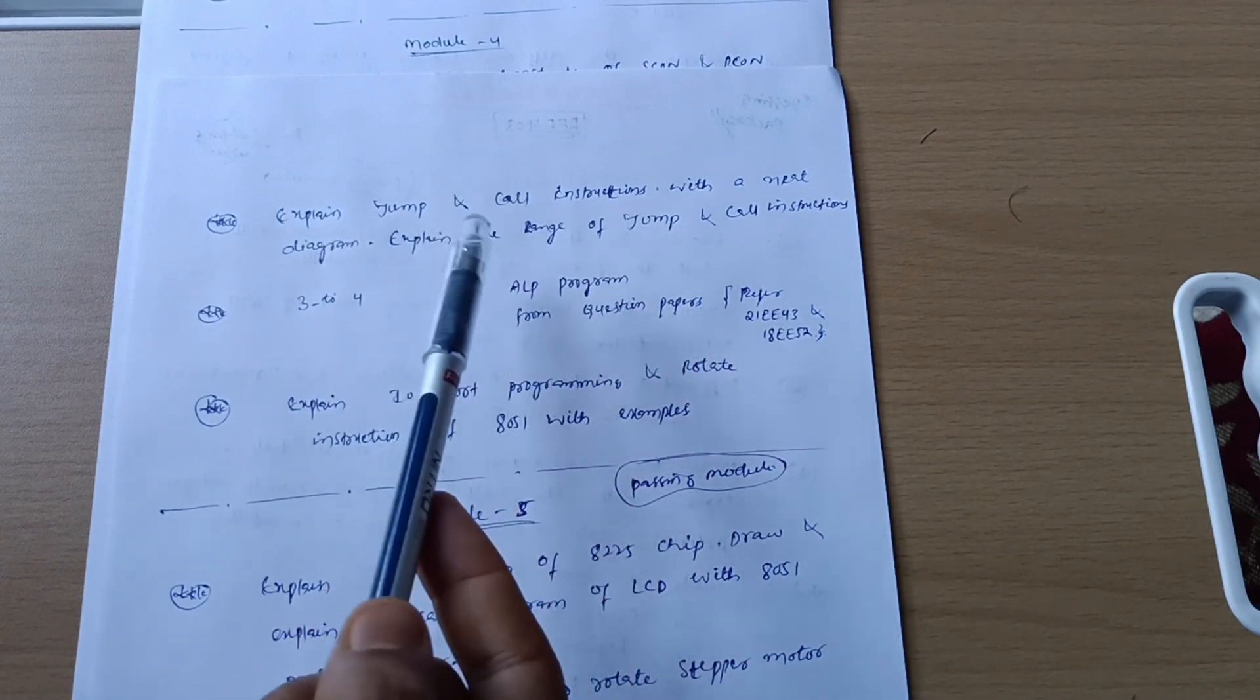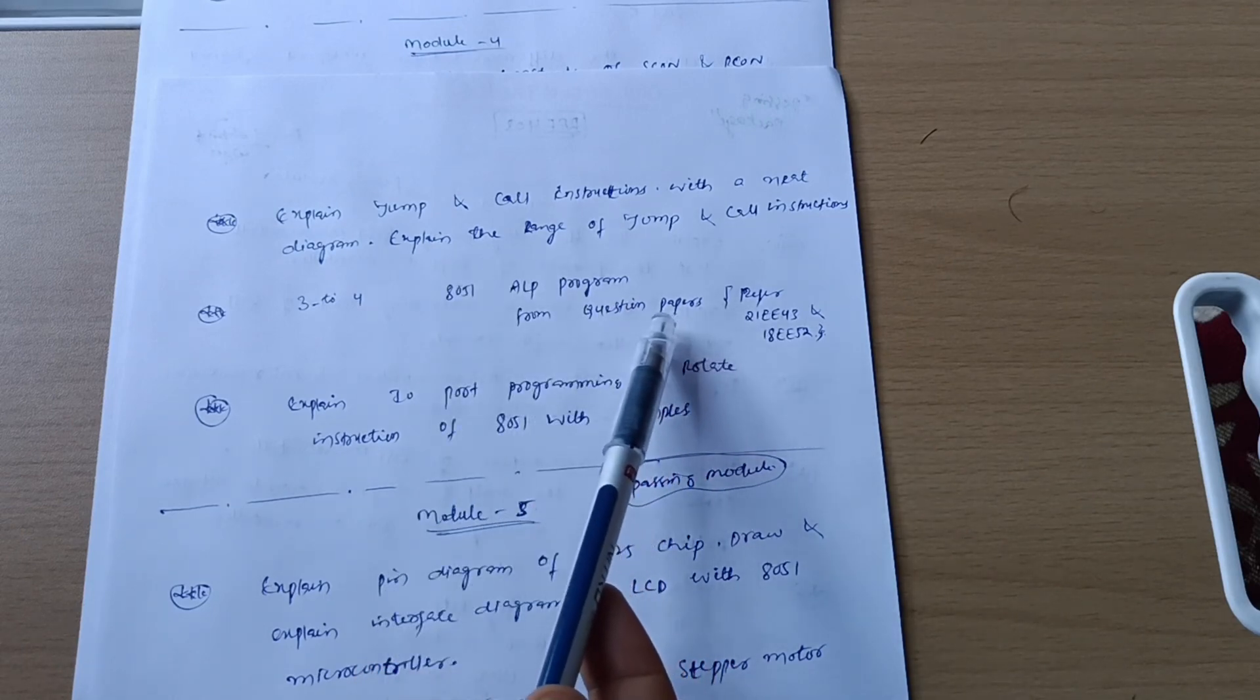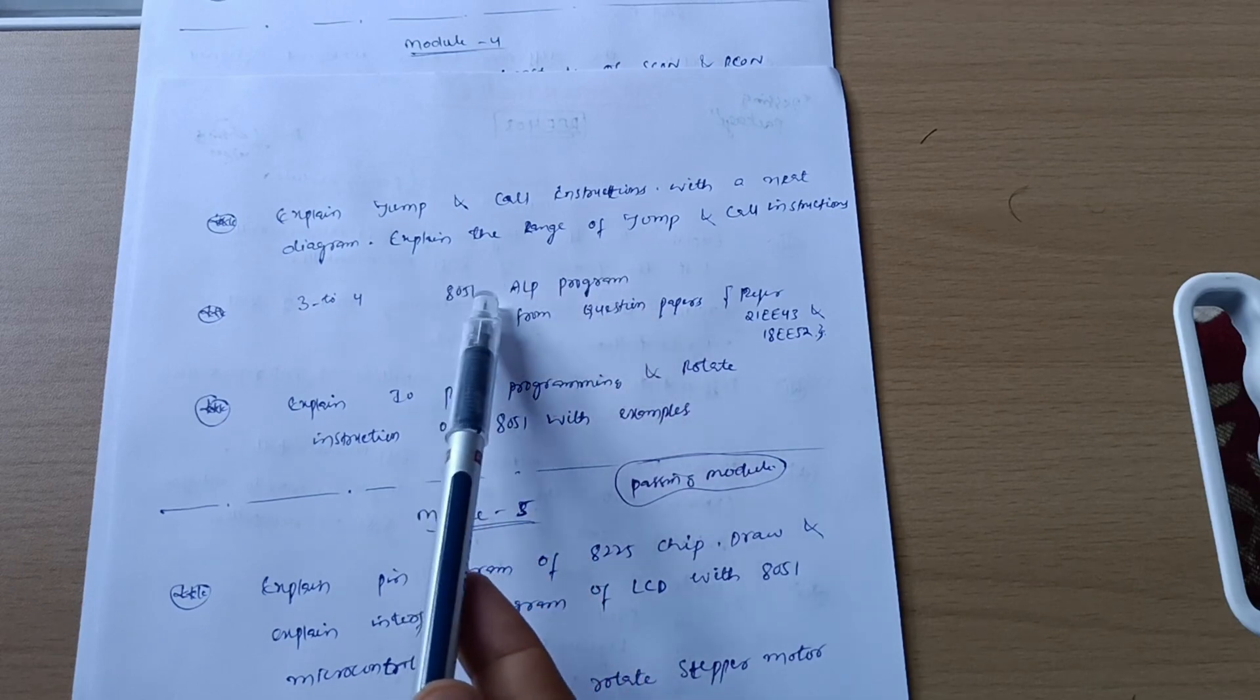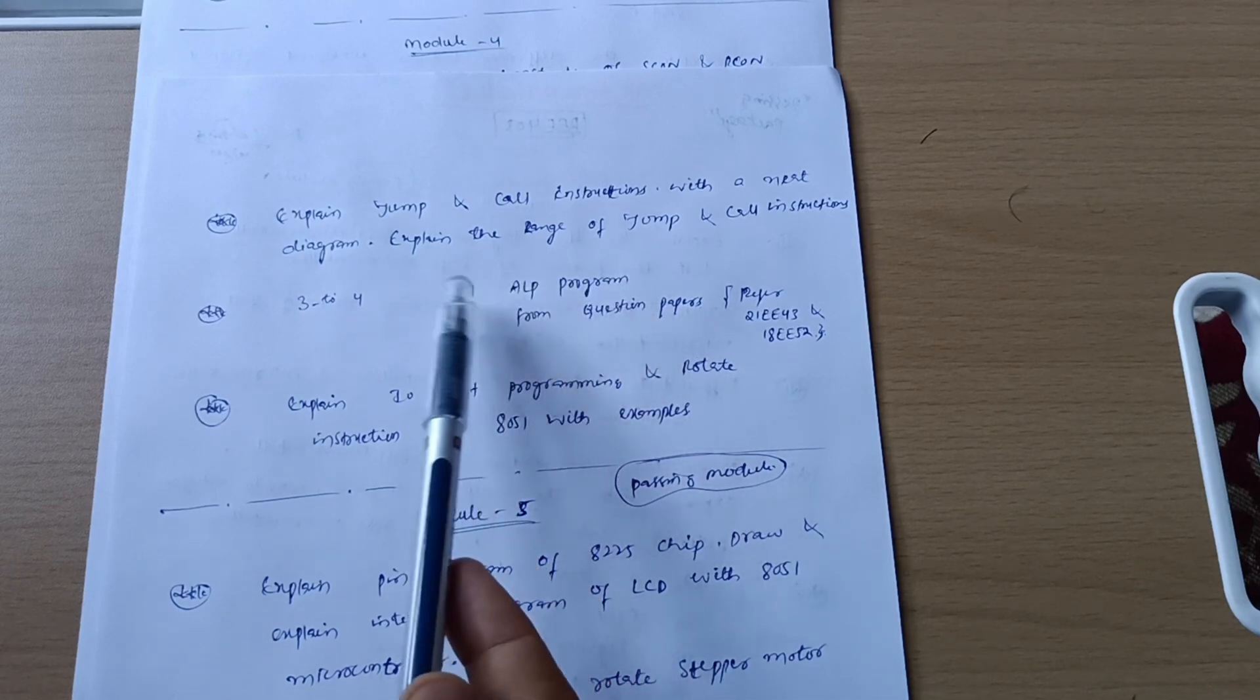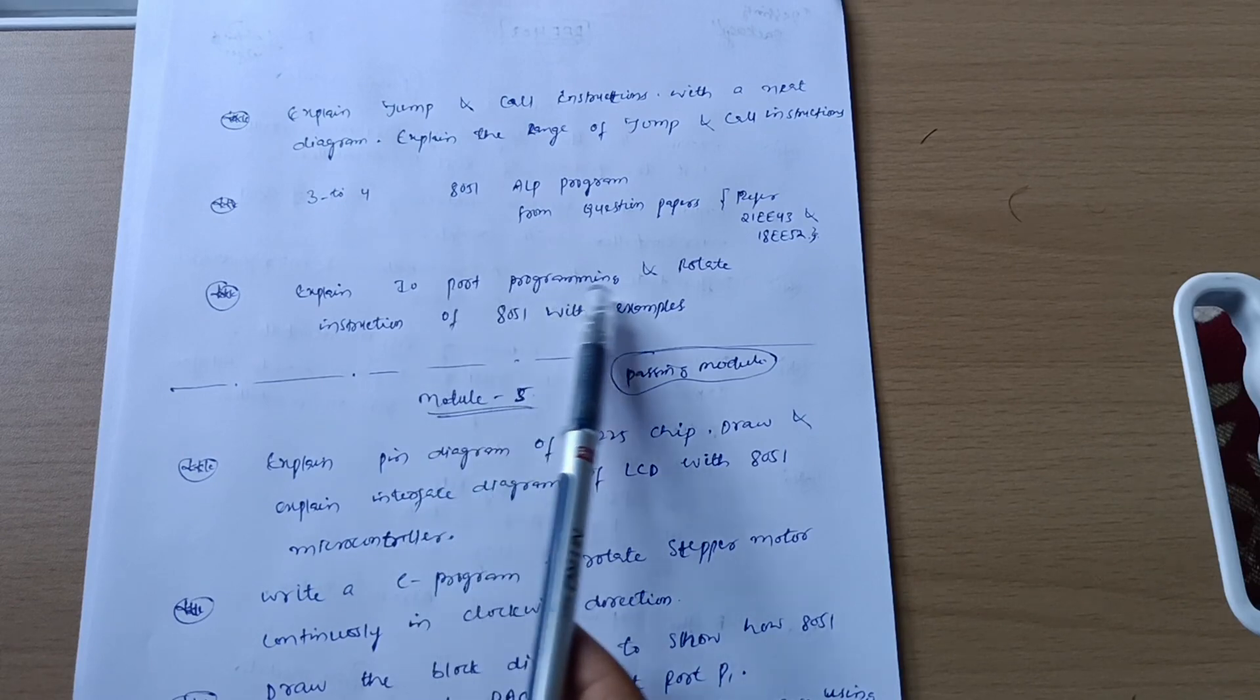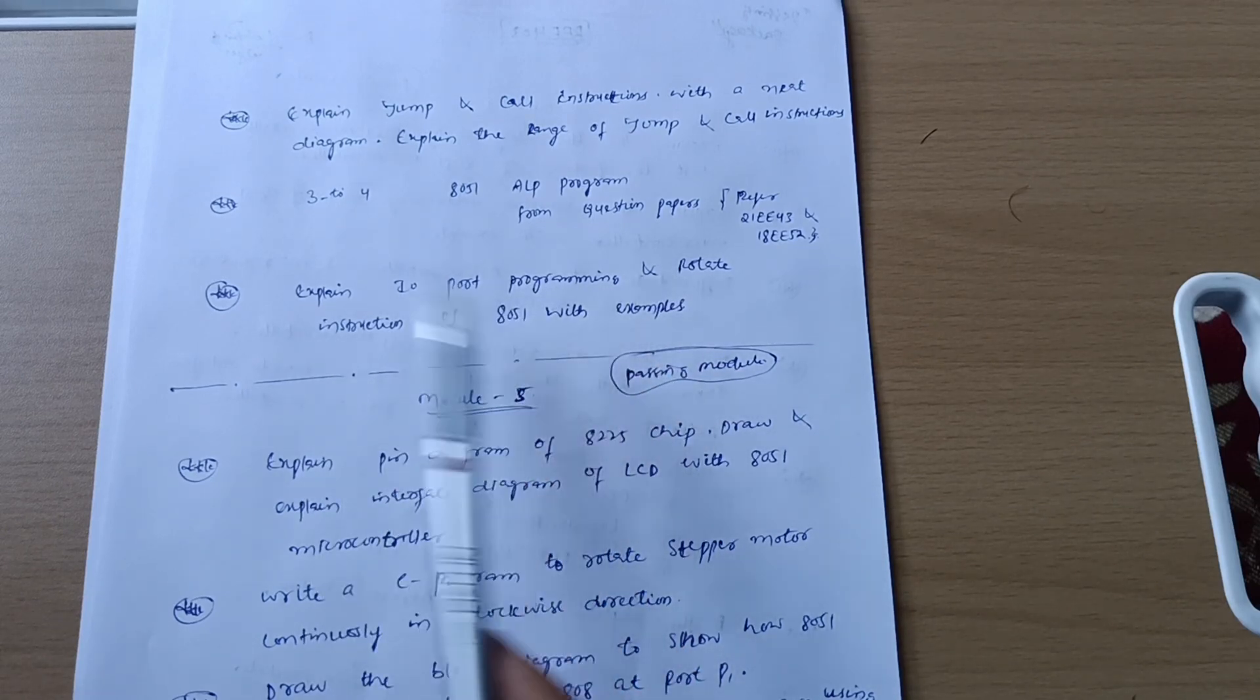My suggestion is just refer these previous question papers and try to analyze which programs are coming. ALP programs, 8051 ALP program - so surely practice three to four programs. Next is explain I/O port programming and rotate instruction of 8051 with example. So this is all about Module 2.